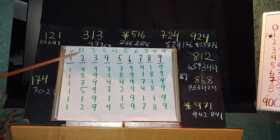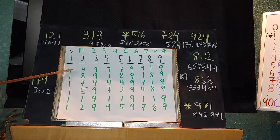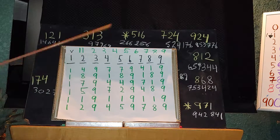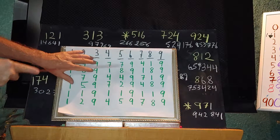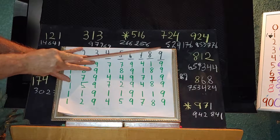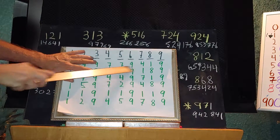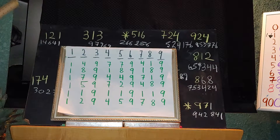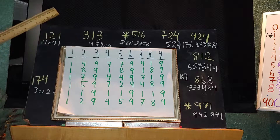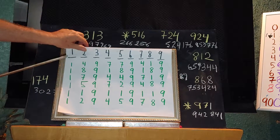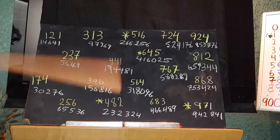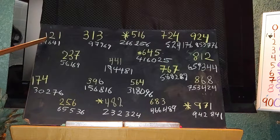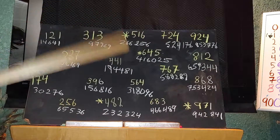Any number that reduces to a 1 will square to a 1. Any number reducing to a 2 will square to a 4. A 3 gives a 9, a 4 gives a 7, a 5 gives a 7, a 6 gives a 9, a 7 gives a 4, an 8 gives a 1, and a 9 gives a 9. One thing we notice is that one-third of numbers will reduce to nines. So if I have a 4 here, it has to turn into a 7 according to the universal law of numbers.